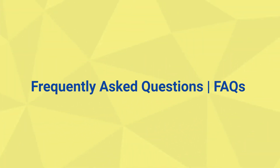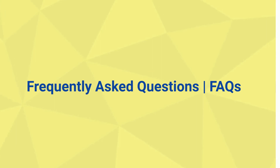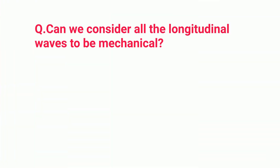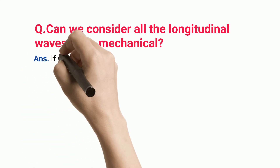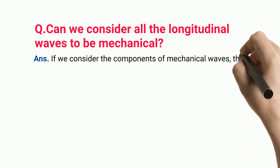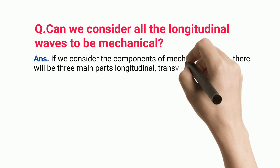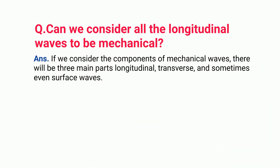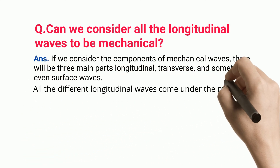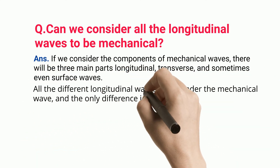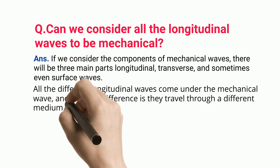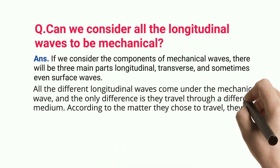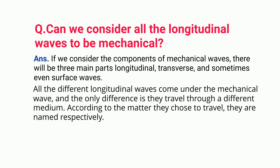Frequently Asked Questions. Can we consider all the longitudinal waves to be mechanical? If we consider the components of mechanical waves, there will be three main parts: longitudinal, transverse, and sometimes even surface waves. All the different longitudinal waves come under the mechanical wave category, and the only difference is they travel through a different medium. According to the matter they choose to travel through, they are named respectively.